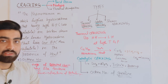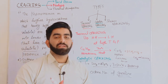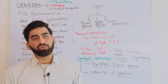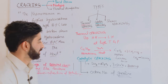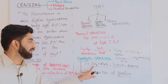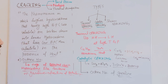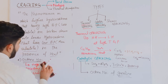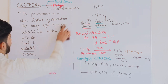Greater the octane number, better the fuel, and less will be the knocking. To improve the octane number of gasoline, we use catalytic cracking with silica and alumina as the suitable catalyst.